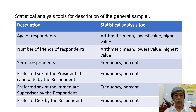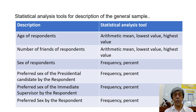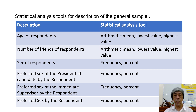These are the statistical analysis tools for the description of the general sample of the study. For the age of respondents: arithmetic mean, lowest value, and highest value. For the number of friends: arithmetic mean, lowest value, and highest value. For the sex of respondents: frequency count and percent. For the preferred sex of the immediate supervisor: frequency count and percent. And for the preferred sex by the respondent: frequency count and percent.